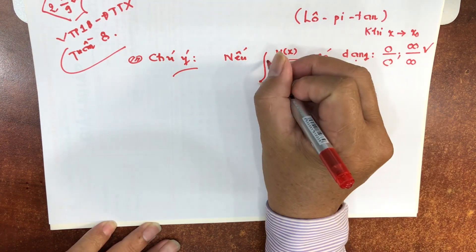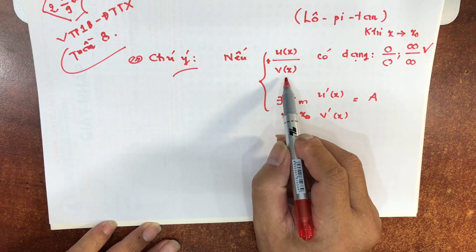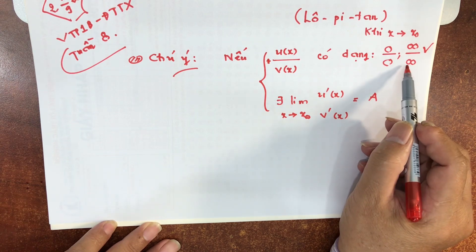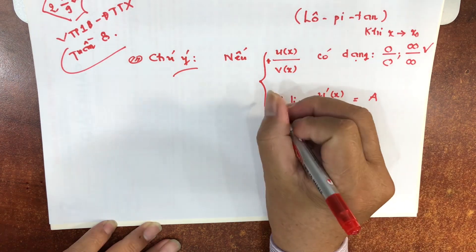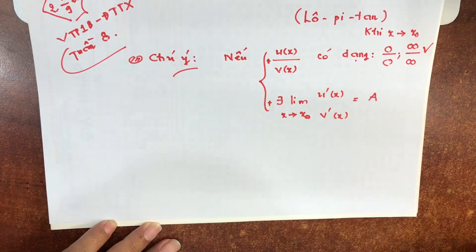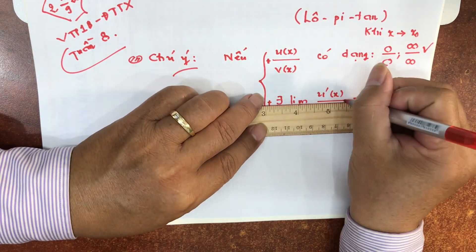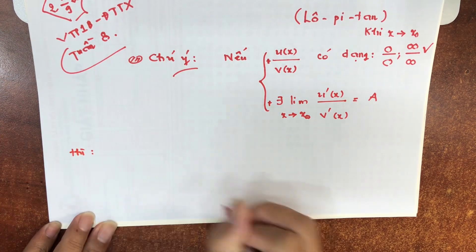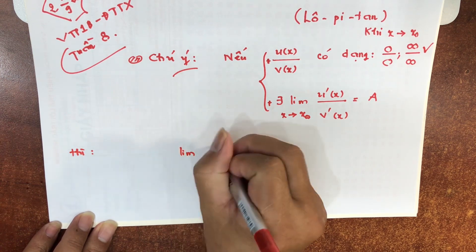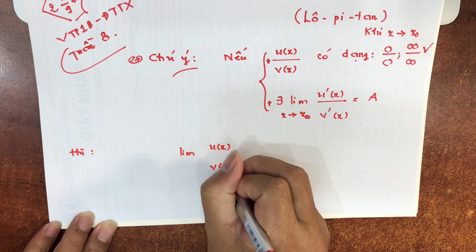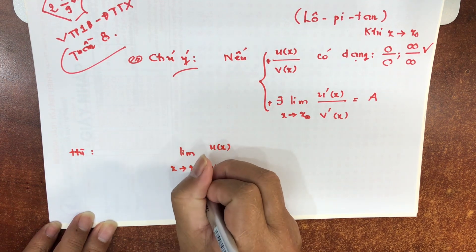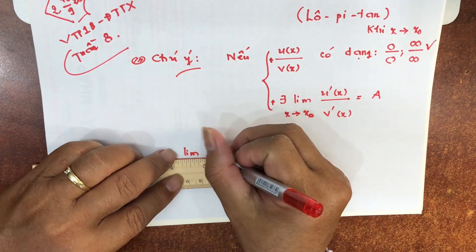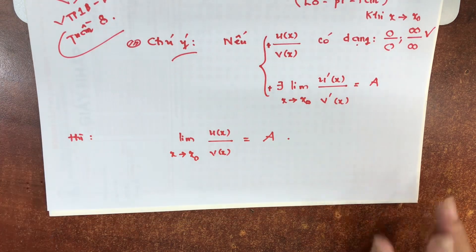Giả thiết thứ nhất: U/V có dạng 0/0 hoặc vô cùng chia vô cùng khi x tiến về x₀ — chúng ta biết rằng đây là 2 trong 7 dạng vô định. Giả thiết thứ nhì: tồn tại giới hạn của U' chia V' khi x tiến về x₀, và giới hạn này bằng A. Thì lim của U/V khi x tiến về x₀ cũng bằng A. Kết quả đó được gọi là quy tắc Loupital.